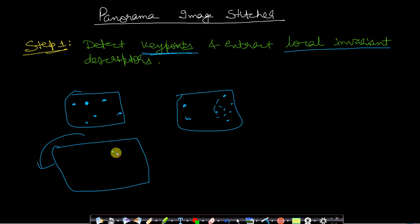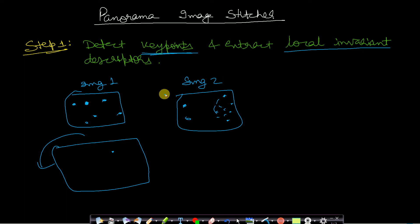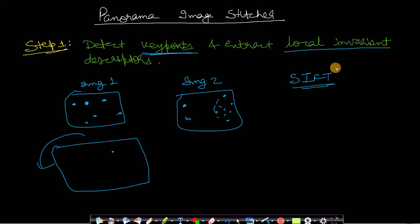Points which do not change on zooming in, zooming out, or rotating are our area of interest and these points are called key points. You need to detect the key points in both images — let's call them image one and image two. For this you have many algorithms, like SIFT, which is very popular for finding key points and local invariant descriptors.